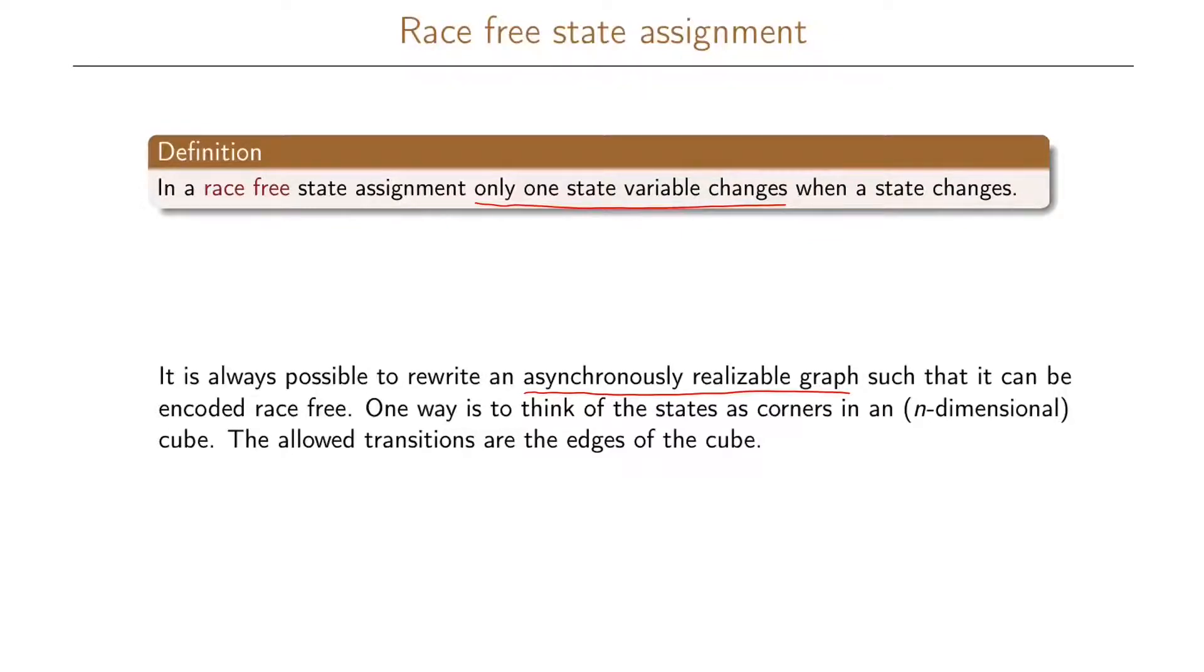And one way to think of this is that the states are corners of an n-dimensional cube. And then the only state transitions that we allow are on the edges of this cube. So let's see an example of this and also see what we mean by race in this case.